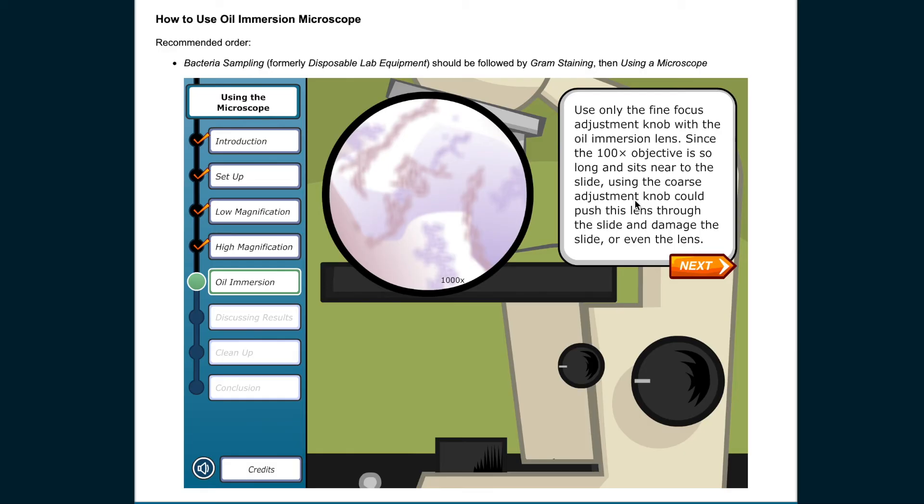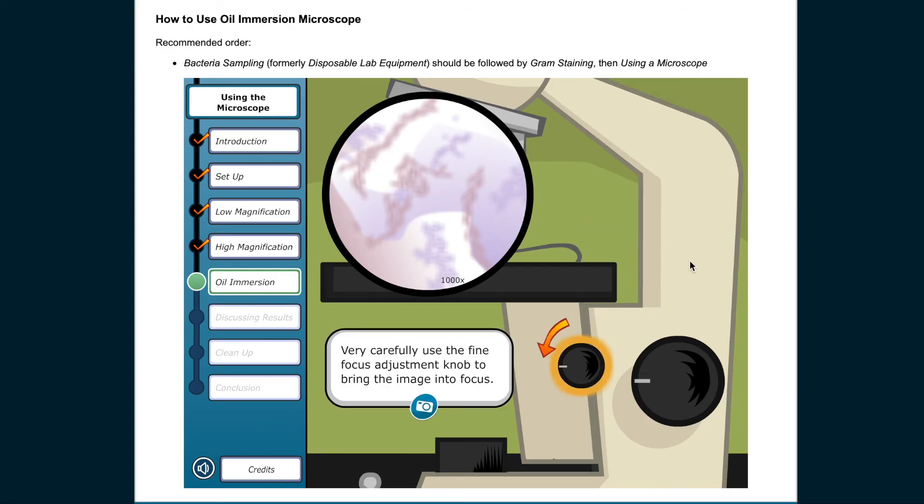Use only the fine focus adjustment knob with the oil immersion lens. Since the 100 times objective is so long and sits near to the slide, using the coarse adjustment knob could push this lens through the slide and damage the slide or even the lens. Use the fine focus adjustment knob to bring the image into focus.